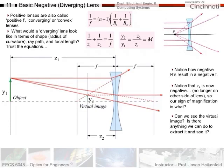Okay, so let's move on to a second type of lens. We first looked at a positive or converging lens. Now we're going to look at a basic negative or diverging lens. So again, positive lenses were also called positive focal length, convex, or also converging.